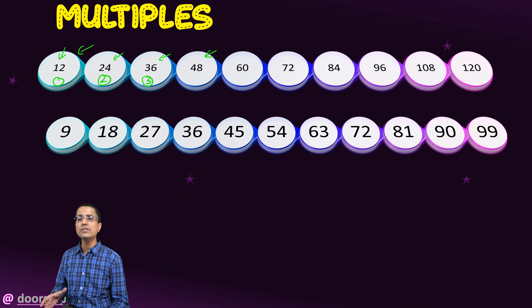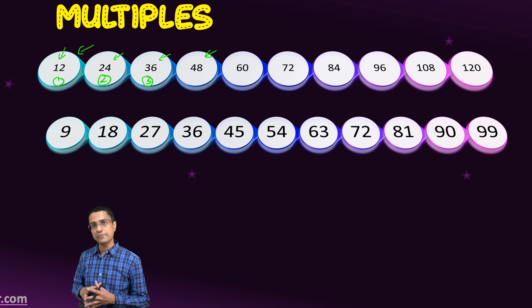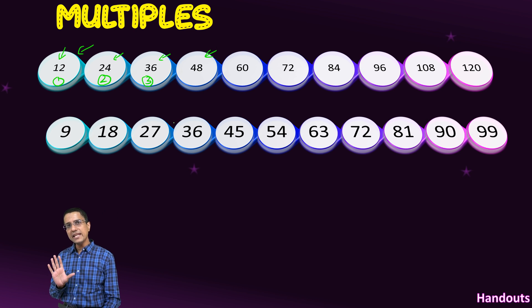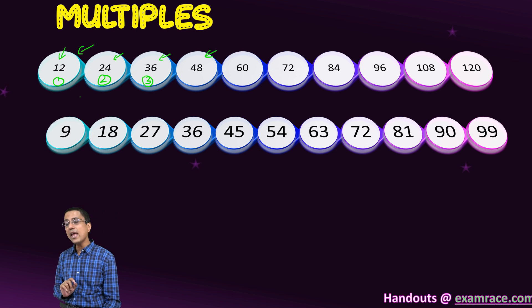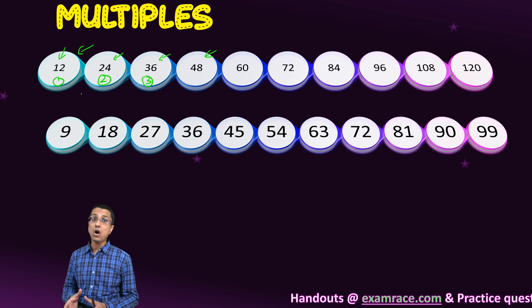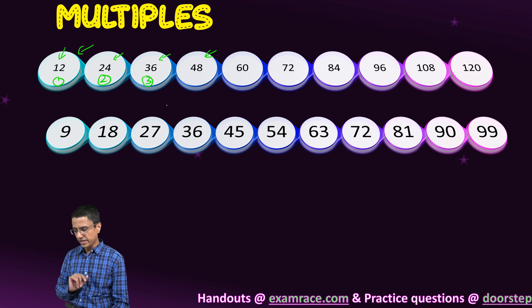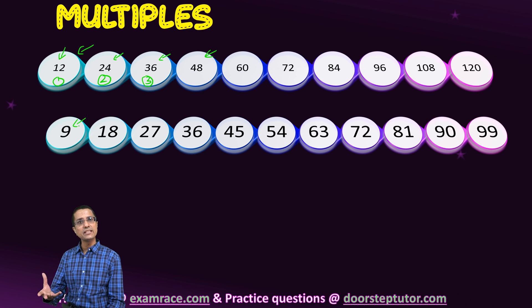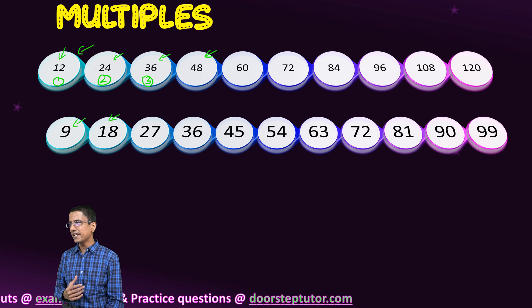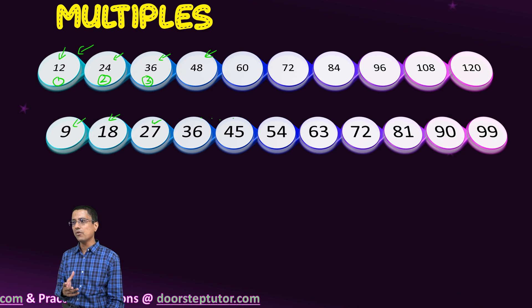12 itself would also be included because that is 12 multiplied by 1. Key thing here to note is that 12 would divide all its multiples. Same thing with 9. We start with 9: 9 ones are 9, 9 twos are 18, 9 threes are 27, and we can go on forever.